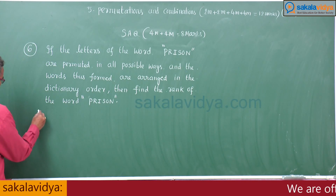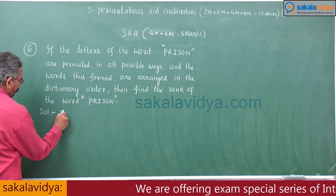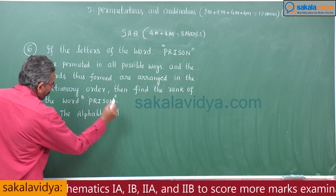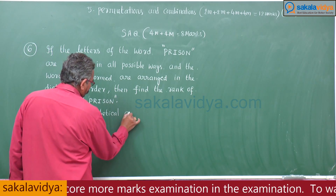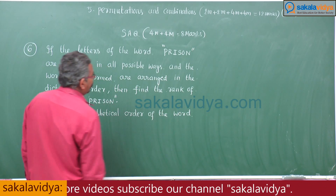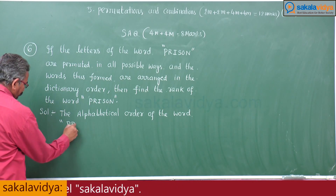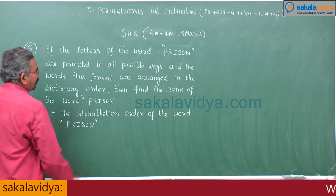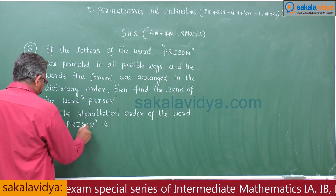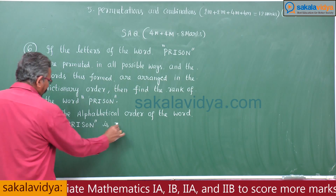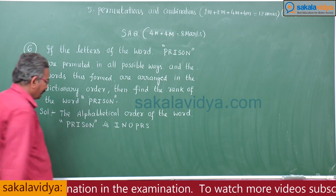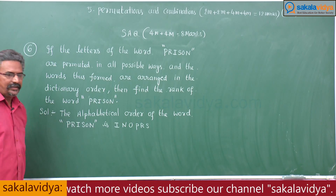Let us do the problem. The alphabetical order of the letters in the word PRISON is: E, N, O, P, R, S — that is 6 letters total.